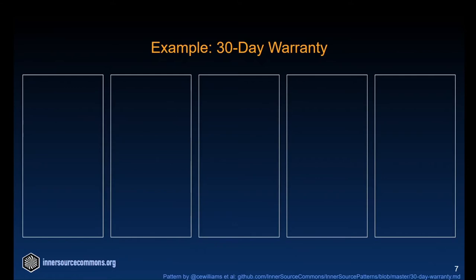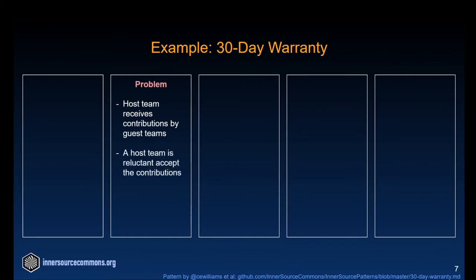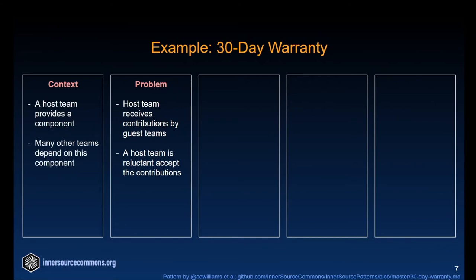How about we look at an example pattern? I picked the pattern '30 Day Warranty', authored by Cedric Williams, which you can find in our GitHub repository at github.com/innersourcecommons/innersource-patterns. The problem is simple: a host team receives contributions by guest teams, but the host team is reluctant to accept those contributions. This only makes sense in a specific context: the host team provides a component that many others depend on or have an interest in.